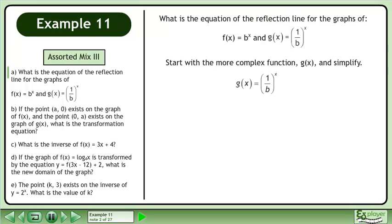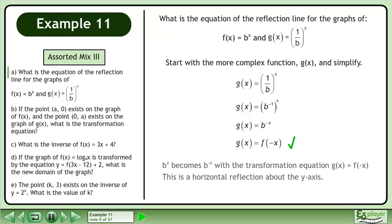Start with the more complex function g and simplify. Write 1 over b as b to the power of negative 1. Multiply the exponents. b to the power of x becomes b to the power of negative x with the transformation equation g equals f of negative x.